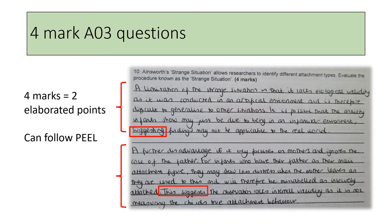For a four-mark AO3 question, I would usually suggest using two different points. It's quite hard to get four marks from one point. If the question doesn't specifically ask you for one limitation or one strength and you're given the license to write more, I would always go for two. Looking at this answer about evaluating the strange situation and attachment, you can clearly see two well-elaborated paragraphs. As a moderator, I can see they've made two points, and if they're well elaborated, it would at least get a level two answer.